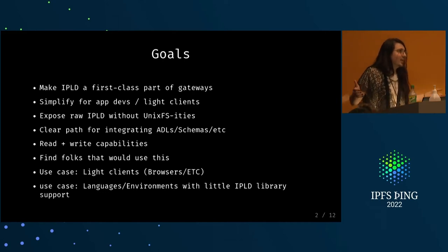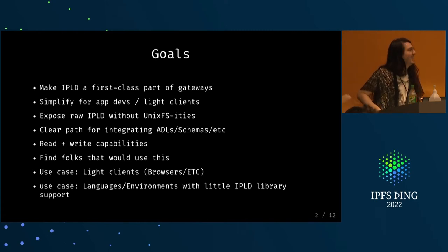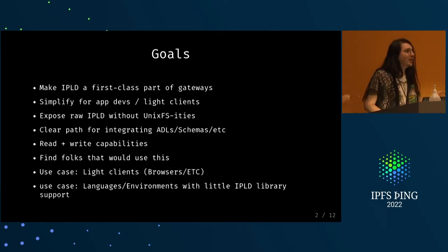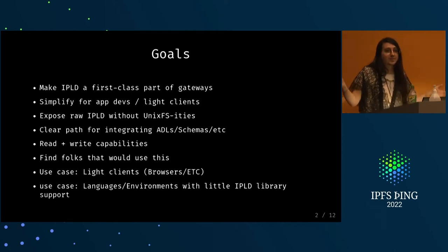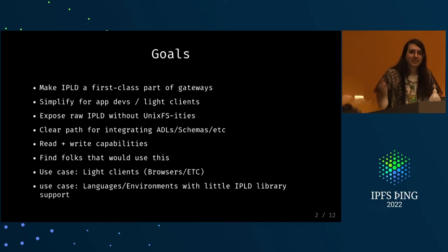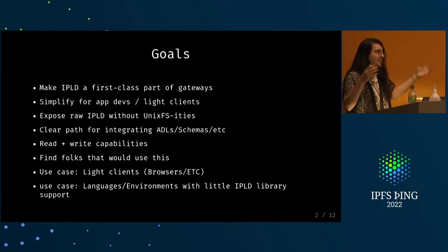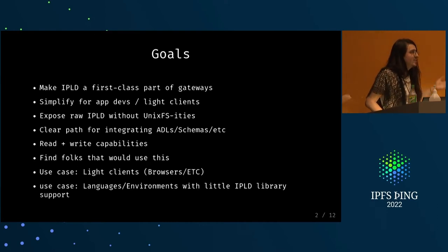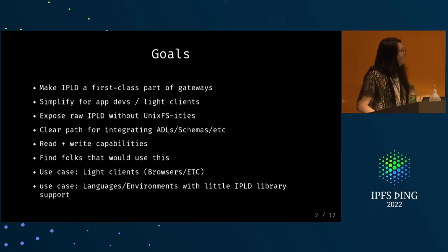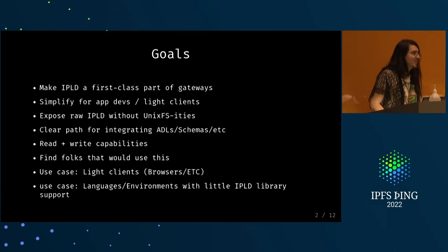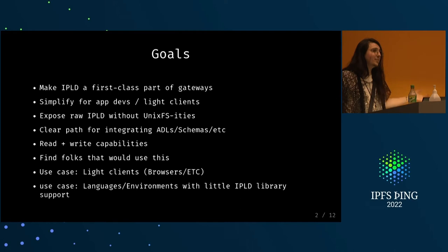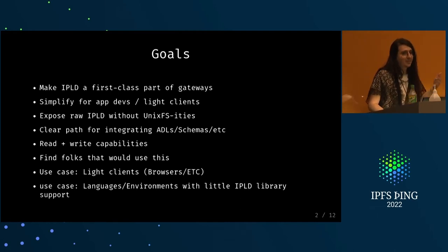Reading IPLD data isn't enough. I just got out of the writable gateways talk, and writable gateways are a thing — they're happening and being standardized. It'd be cool if we could read IPLD data but also write it out. One of the goals of this talk is to get some ideas going and find folks that would want to use this. Client examples include web browsers with custom protocol handlers like Brave or Egregore, or environments where getting an IPLD library is just not realistic, like a PHP developer who really wants to do IPLD.